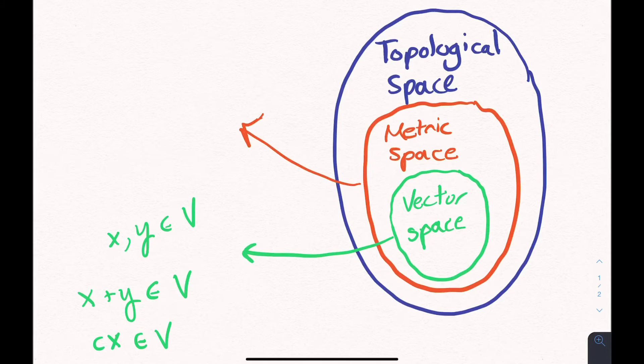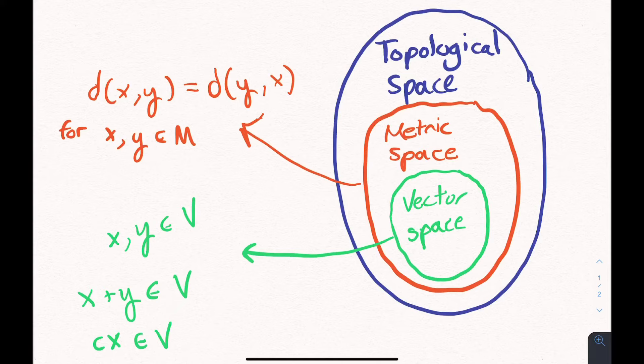If we zoom out to a metric space, we lose the guarantee that addition and scalar multiplication will work in the usual way. All we are left with is a notion of distance. So every metric space has the property that you can define exactly a distance between any two points in that space. And that distance is the same whether you take it starting from point X to point Y, or you start at point Y and go to point X. So the distance is the same regardless of where you start, and that kind of corresponds to our everyday notion of distance.